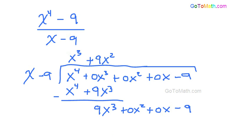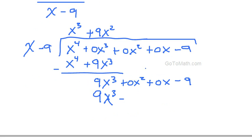Okay, so then we go 9x squared times x is 9x cubed. Then 9x squared times negative 9 is, that's going to be negative 81, isn't it? Negative 81x squared.